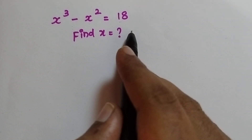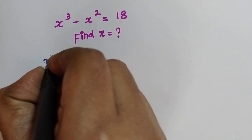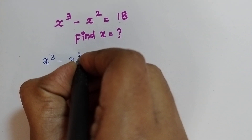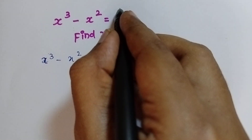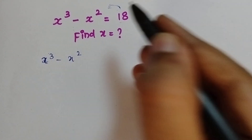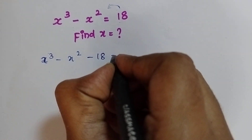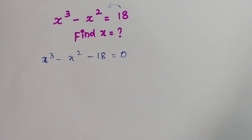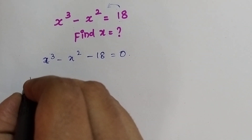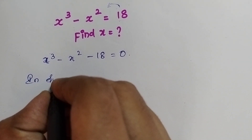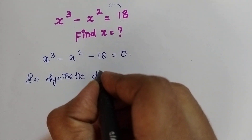So if you see here, this is the equation. There is a cube term and there is a square term, and the x term is missing, and there is a constant term. I am going to shift this towards the left side. Therefore, plus 18 becomes minus 18, and it is equal to 0. So here the x term is missing. I am going to solve this equation using the synthetic division method.